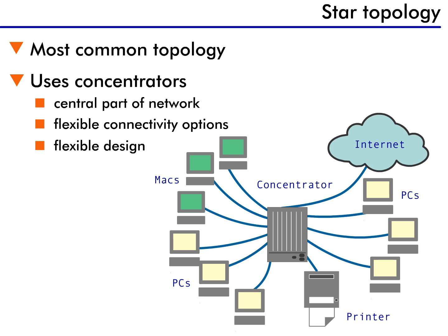The use of concentrators allows different users connected to the concentrator to have different connectivity options. One user can have 10 megabits of bandwidth, another might have 100, and another might have 1,000. Additionally, different submodules can be installed in the concentrator, allowing for different protocols on the same LAN.